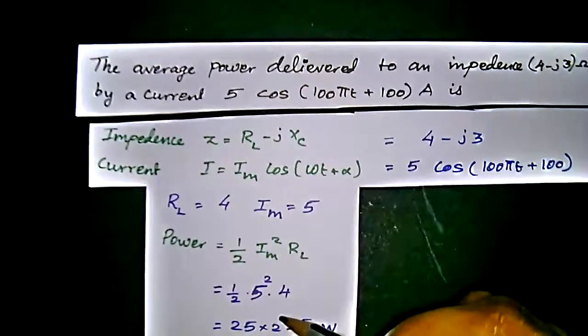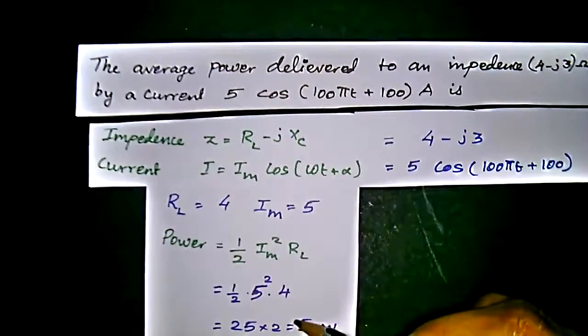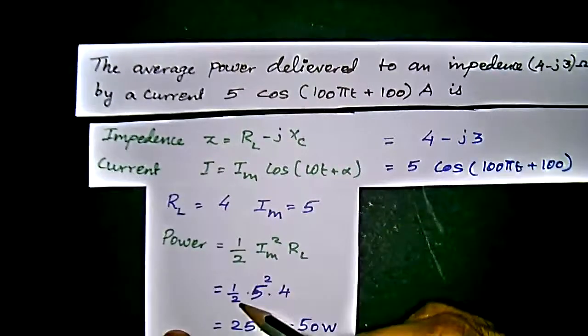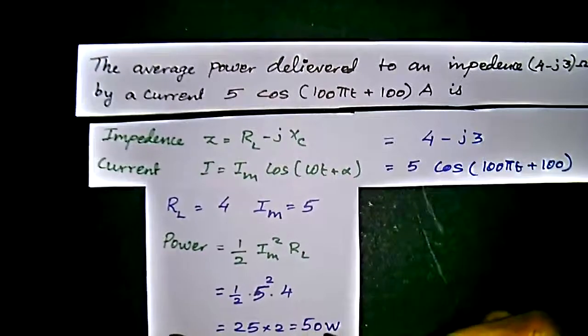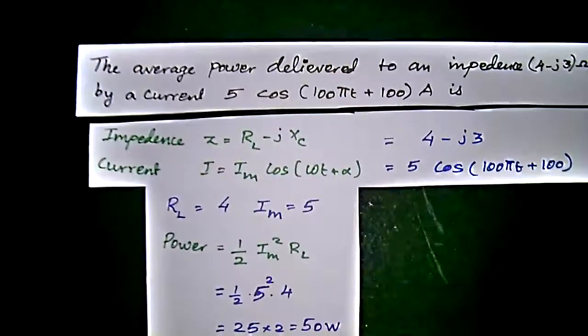We will get 25, multiplied by 2 because of this 4 divided by 2, we will get 2. So we will get power as 50 watts.